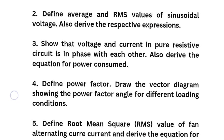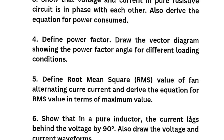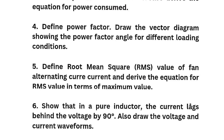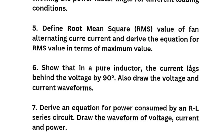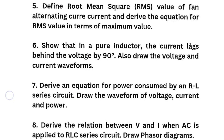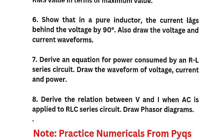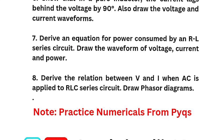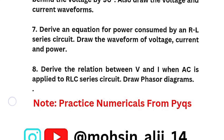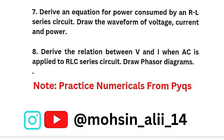Define RMS and average value for alternating current and derive the equation for RMS value in terms of maximum value. Show that in a pure inductor the current lags behind the voltage by 90 degrees — also draw the voltage and current waveform. Derive an equation for power consumed by an RL series circuit and draw the waveform of voltage, current and power. Derive the relation between V and I when AC is applied to an RLC series circuit, and draw phasor diagrams. These are all the theoretical questions from Module 2 — practice numericals from previous year question papers.